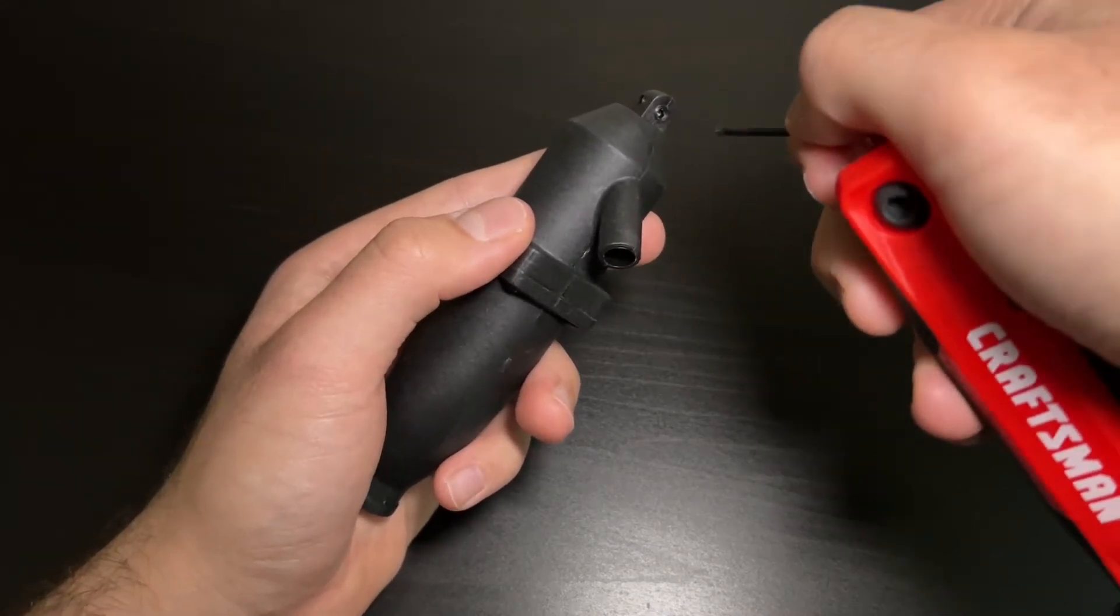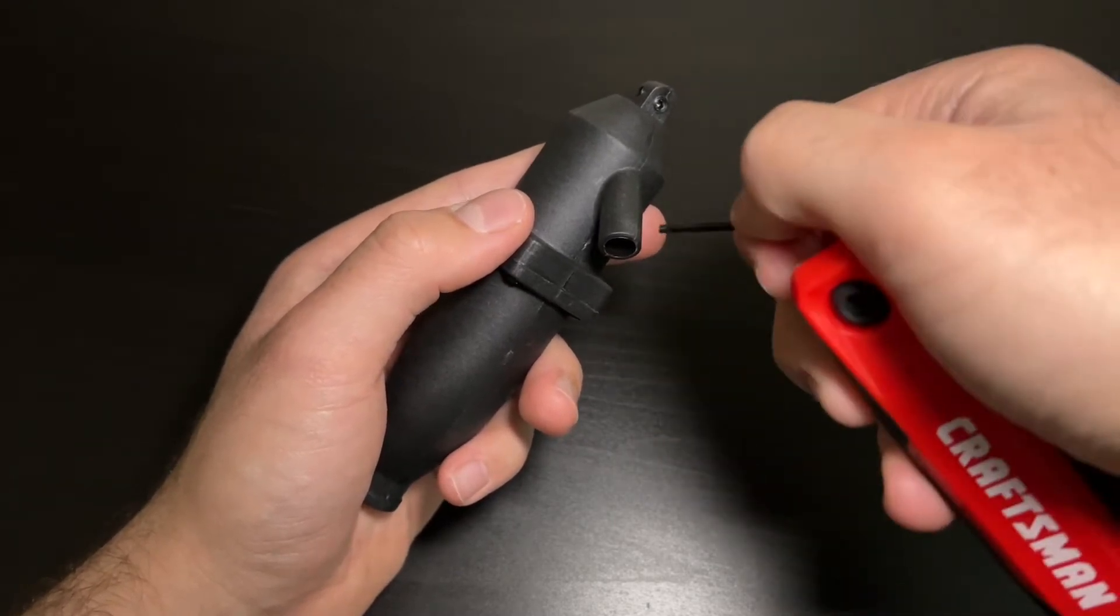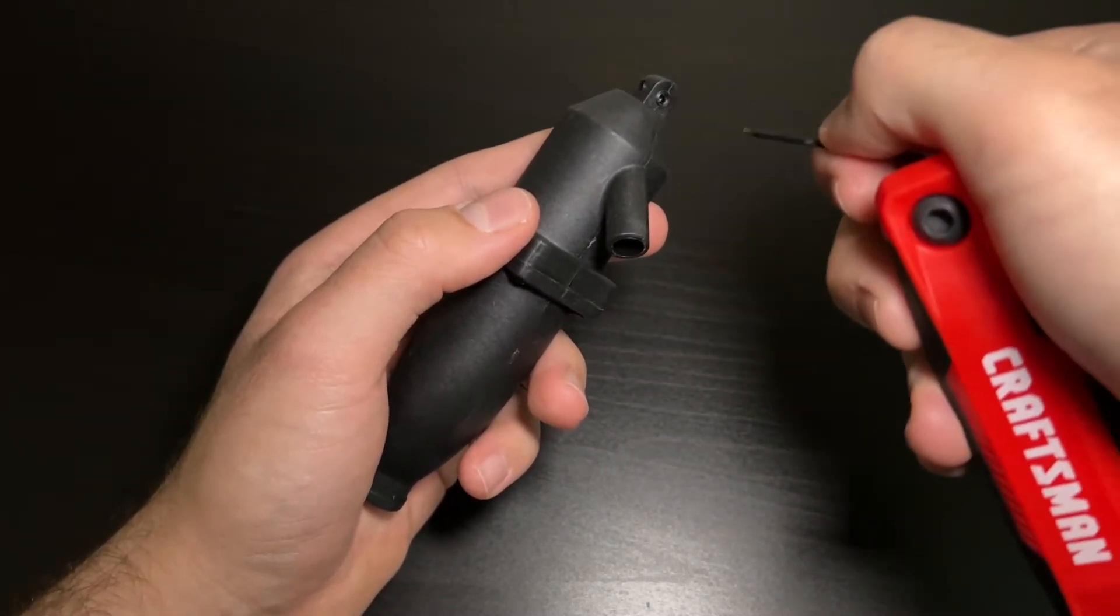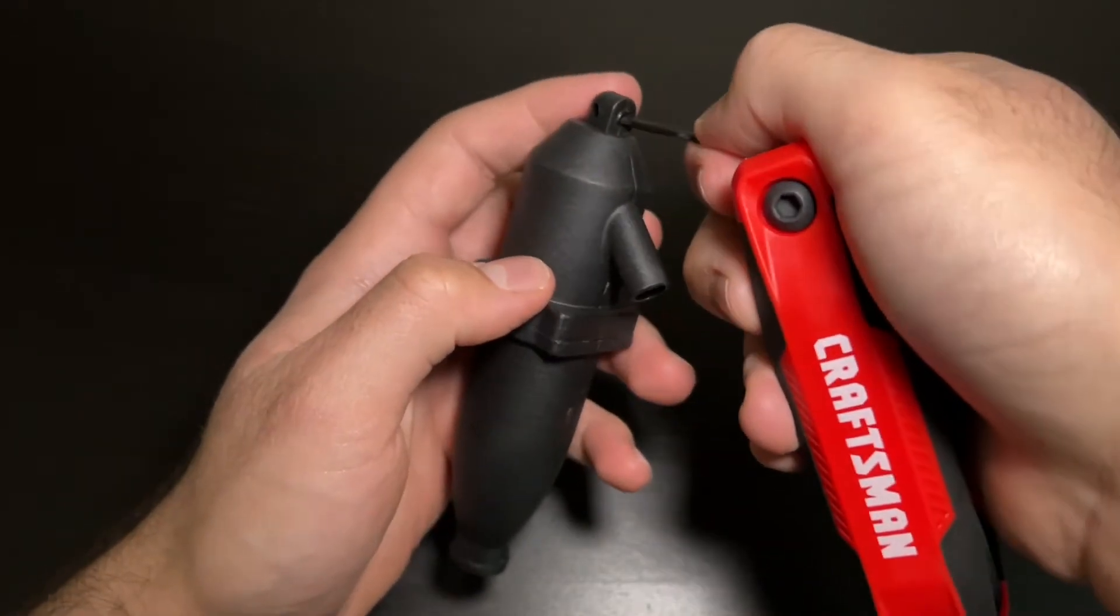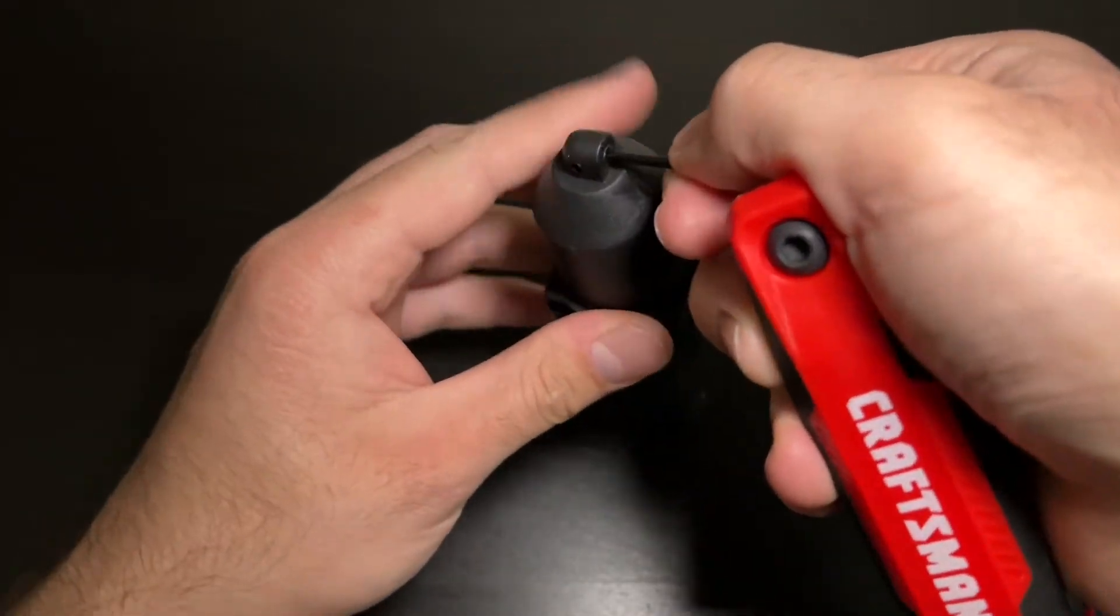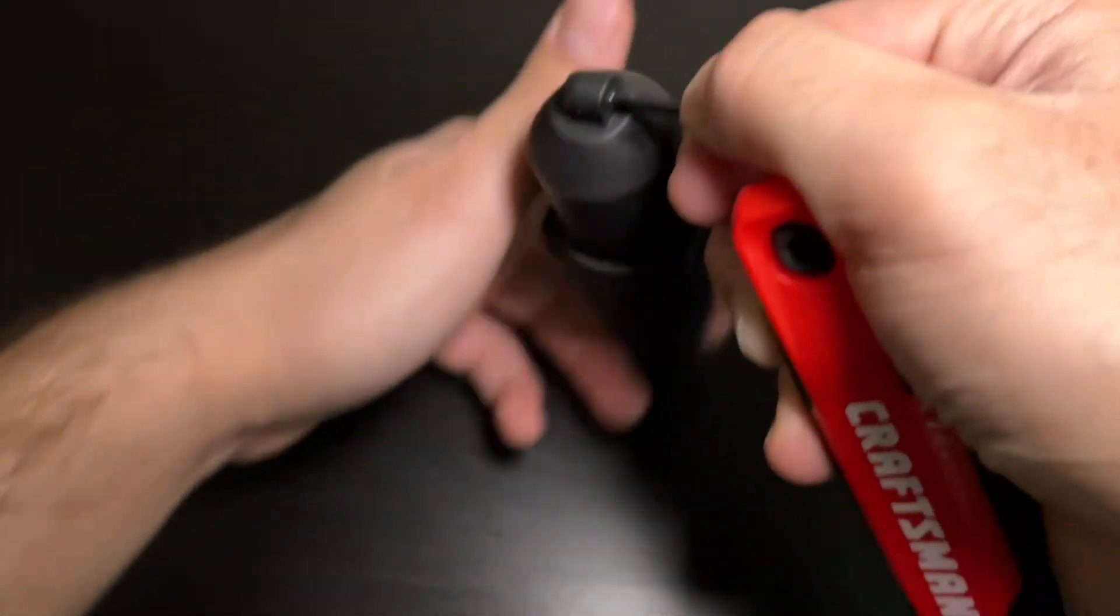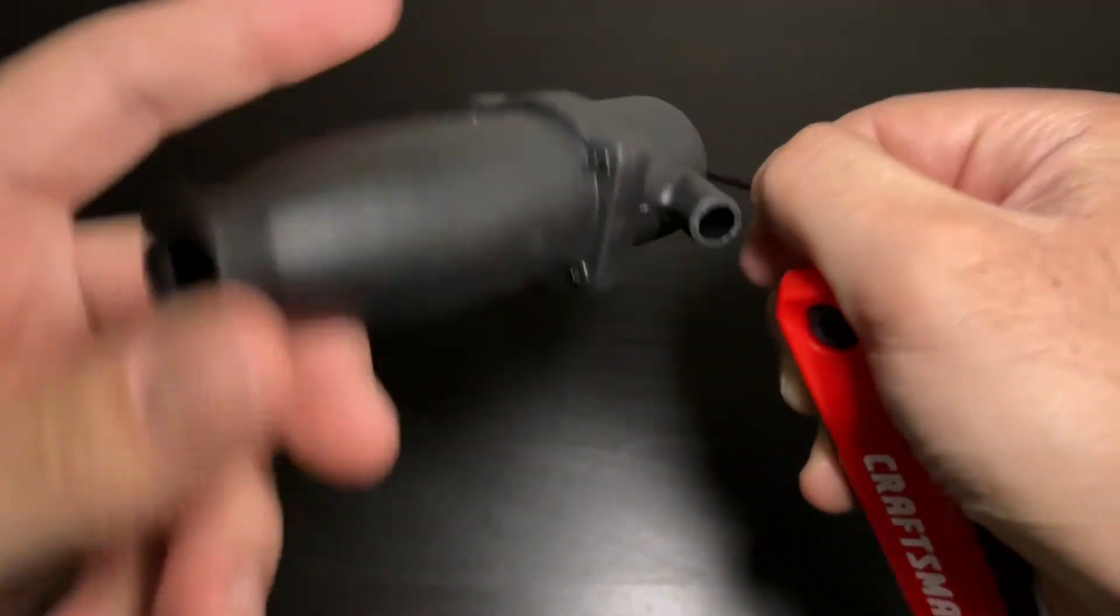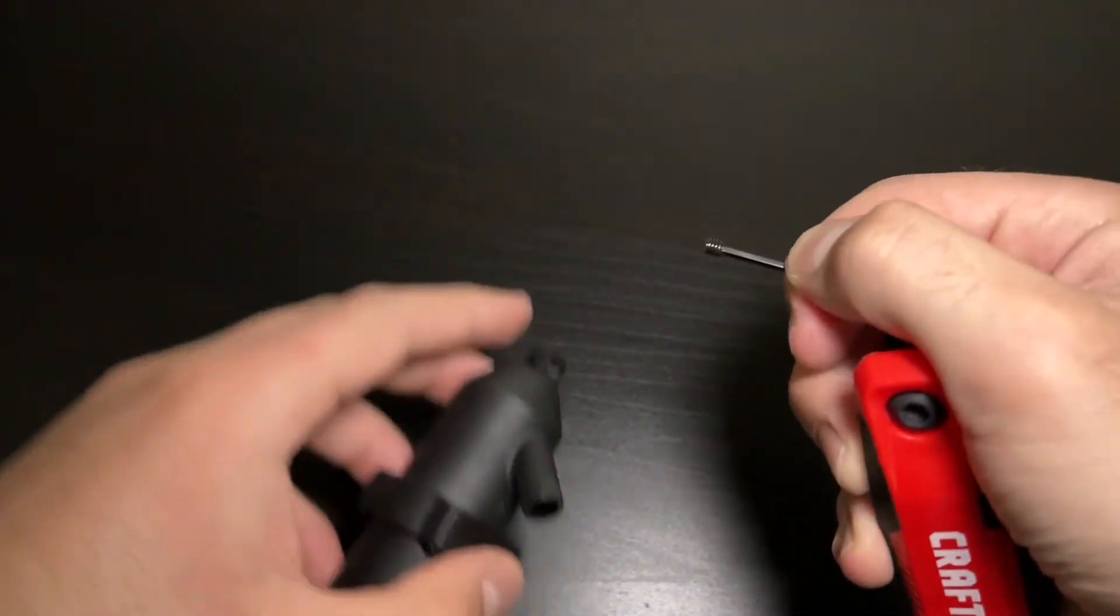This little set screw that I just loosened in order to remove this exhaust I have to reuse that set screw on my new stainless exhaust so I'm going to use my allen wrench tool to remove it. By turning it the set screw will come out.